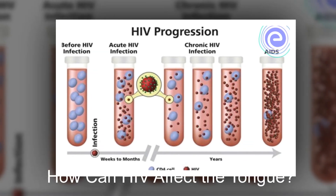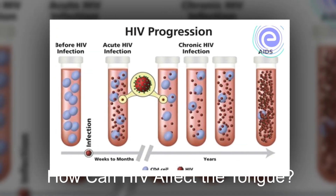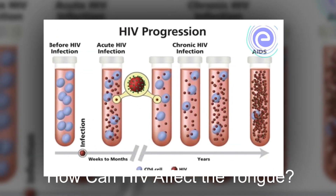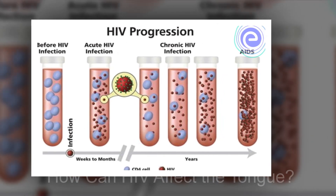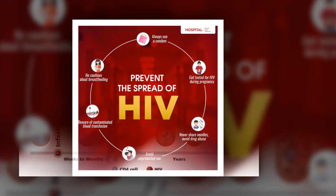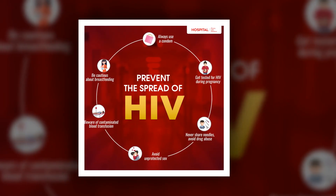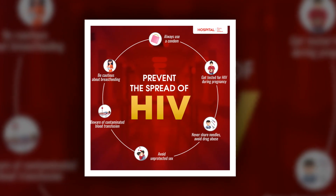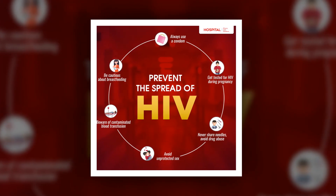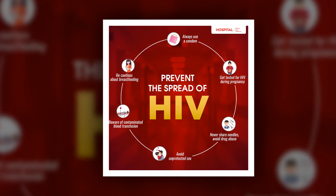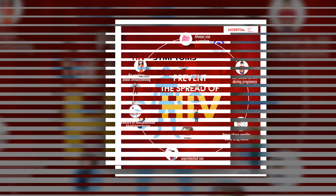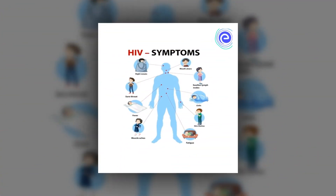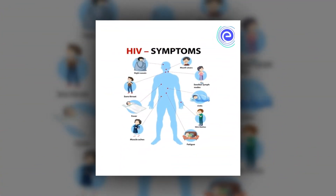How can HIV affect the tongue? While anyone can experience problems related to the teeth and mouth, people with HIV more often experience these concerns, with anywhere from 32% to 46% of people living with HIV having at least one significant HIV-related oral health issue in their lifetime.